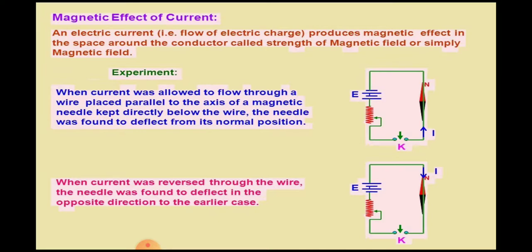The flow of electric charge produces a magnetic effect in the space around the conductor, called the strength of magnetic field, or simply magnetic field. Faraday, a scientist, stated that whenever there is a flow of current, a magnetic field will be produced. Whenever there is a change in magnetic flux, an induced current will be produced. So current and magnetism are related with each other.